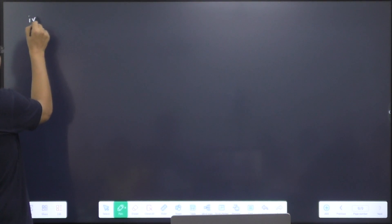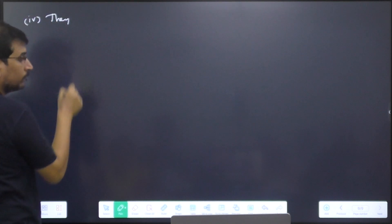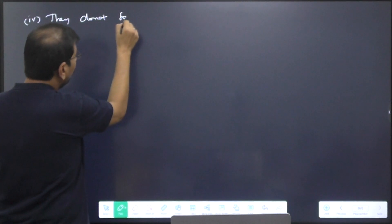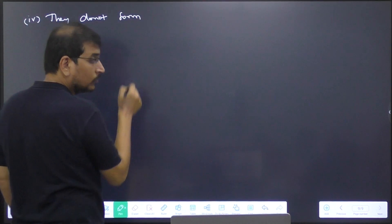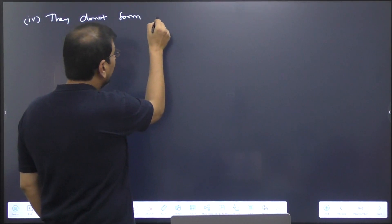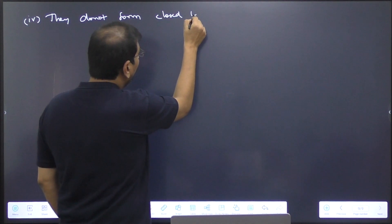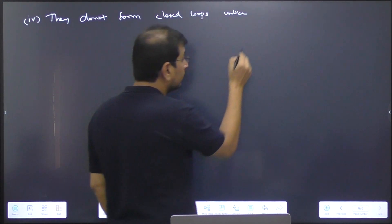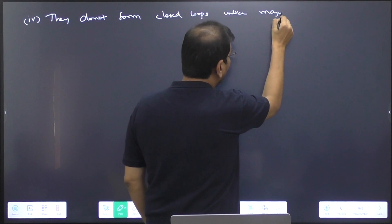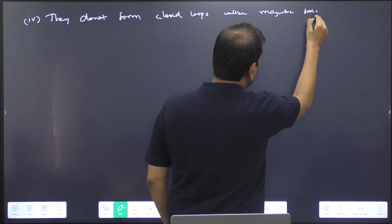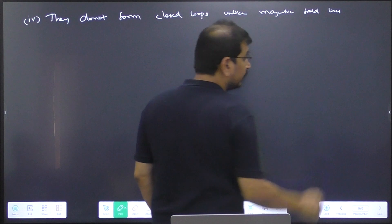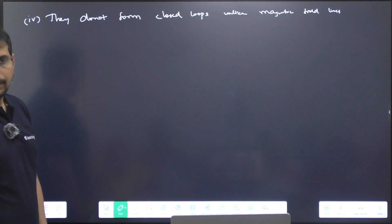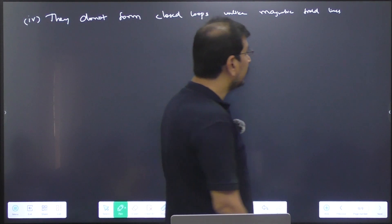The fourth point: electric field lines do not form closed loops. We will mention this point — unlike magnetic field lines, electric field lines do not form a closed loop.